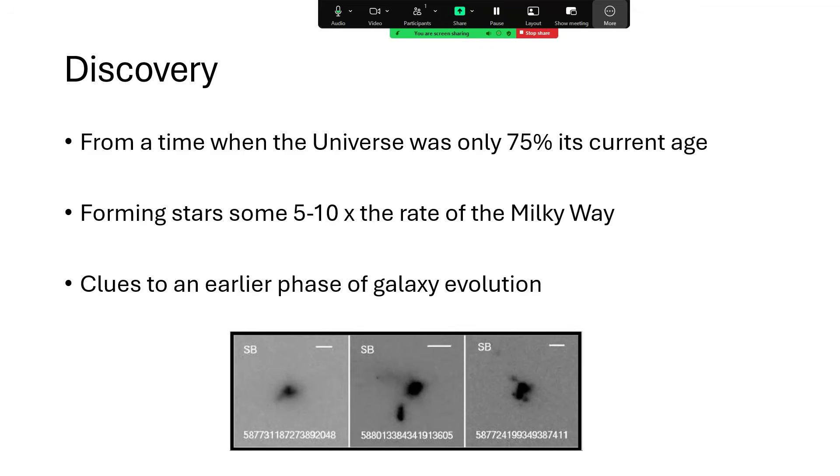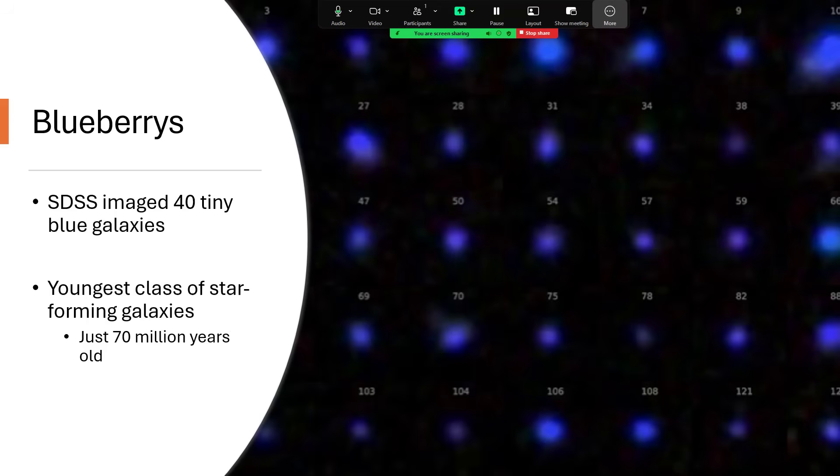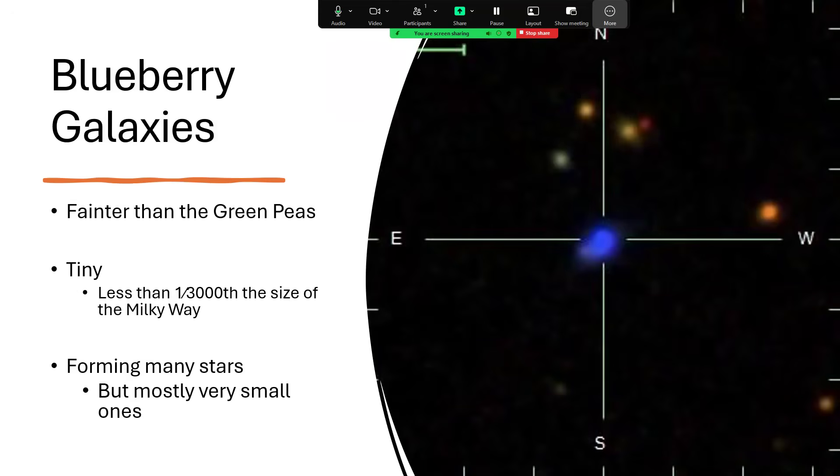Now since the discovery of the GPs, the Green Peas, we have BBs, Blueberries. Here are another Sloan Digital Sky Survey image of a whole lot of blue dots that were discovered, the so-called Blueberries. And these are relatively young, but just in the last 70 million years or so that these galaxies seem to have come into existence. And they're quite unusual. They're significantly fainter than the GPs and much smaller, one three-thousandth the size of the Milky Way.